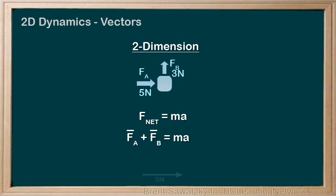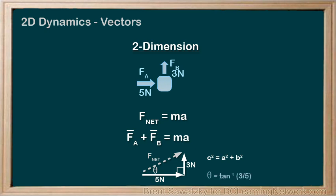Our vector diagram would show 5 newtons right, and then tip to tail, 3 newtons up. The resultant vector, or Fnet, would be from the start of the vector addition to the end. We can see that we have a bit more to consider than right and left here. In this case, we need to pull out some trig. It's a right triangle, so the Pythagorean theorem — c² = a² + b² — would do the job to determine the magnitude of the resultant Fnet. In order to determine the direction of Fnet and the resulting acceleration, we would use the tan ratio.